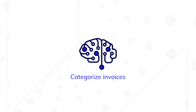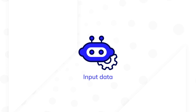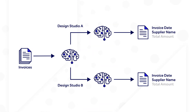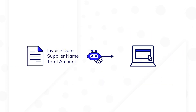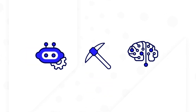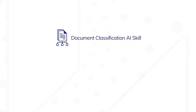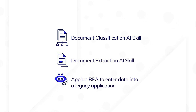Appian's automation capabilities are perfect to categorize invoices, extract data, and input data into a system, no matter where it lives. Using AI skills, the agency can categorize the invoice based on the supplier and then extract the data to be used in an Appian process. Once that data is available in Appian, entering the data into a legacy application can be automated using Appian RPA. By using Appian's automation capabilities, Acme Design Studio can automate their daily tasks using the Document Classification AI skill, Document Extraction AI skill, and Appian RPA to enter data into a legacy application.